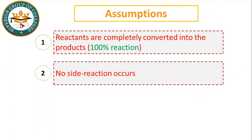The second assumption is no side reactions. Side reactions should not occur. For example, if we want reaction A going to B, but instead a side reaction produces a different product — that is a side reaction. In stoichiometry, we assume no side reactions occur; only the desired product is formed.